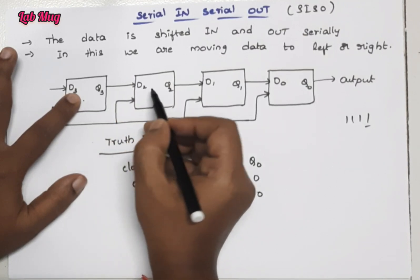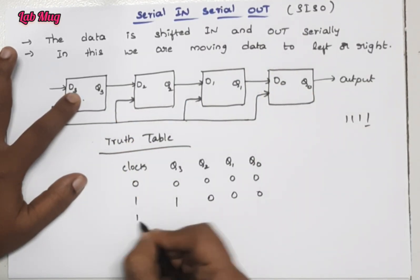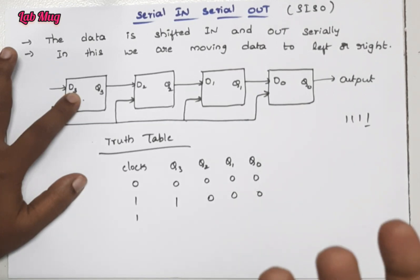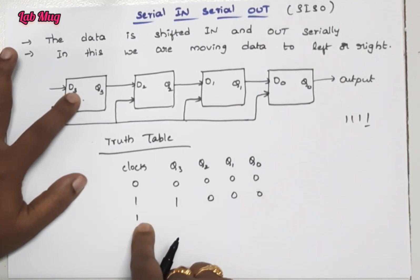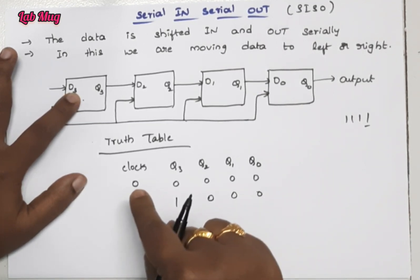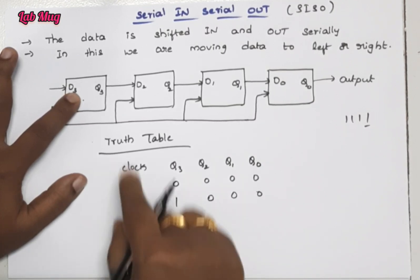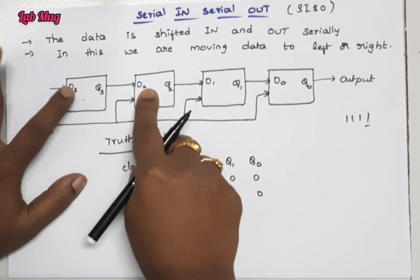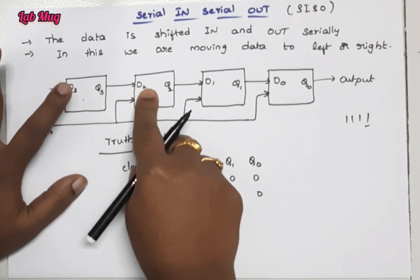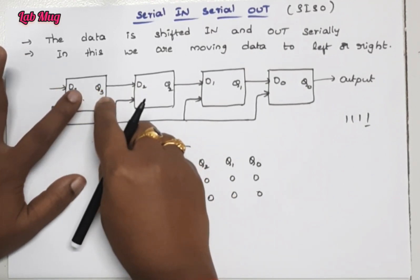This Q3 value one is passing to D2. In the second clock pulse, when the clock value is one, the D2 value becomes one because of D3. So the Q3 value one is passed to D2.